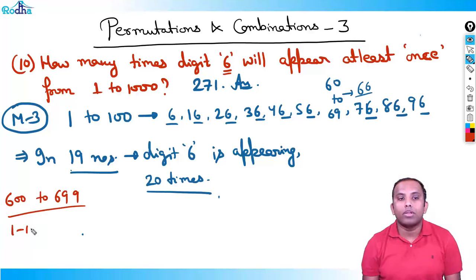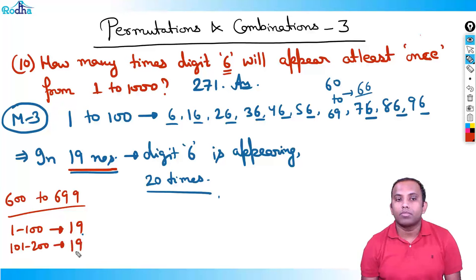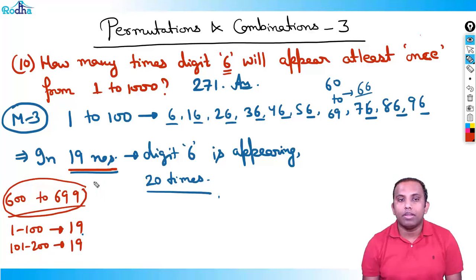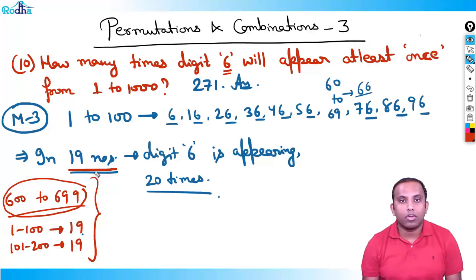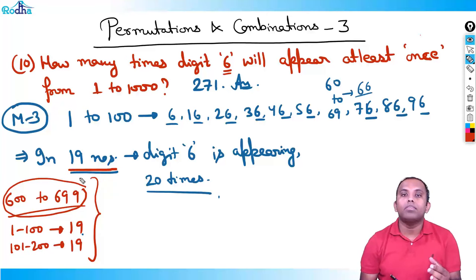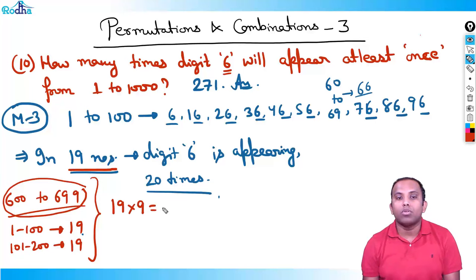Now I'll apply this concept to the original question — from one to one thousand. Except for the range six hundred to six ninety-nine, in every other set of one hundred numbers, digit six occurs in nineteen numbers. So in nine other hundreds, digit six appears in 19 × 9 = 171 numbers.